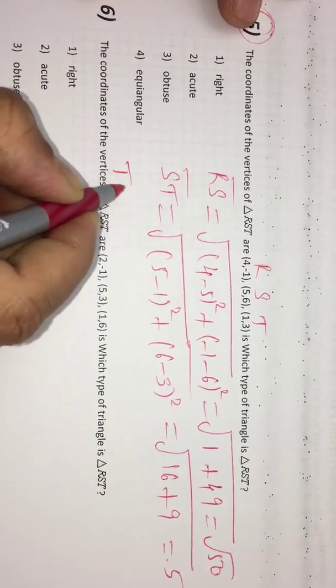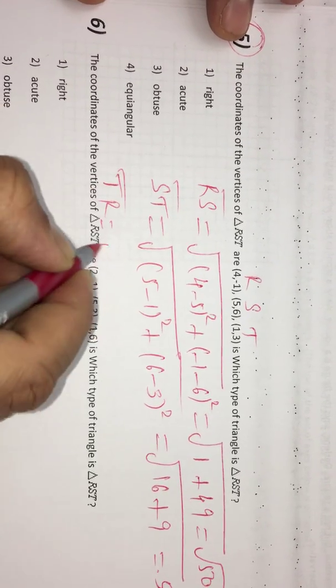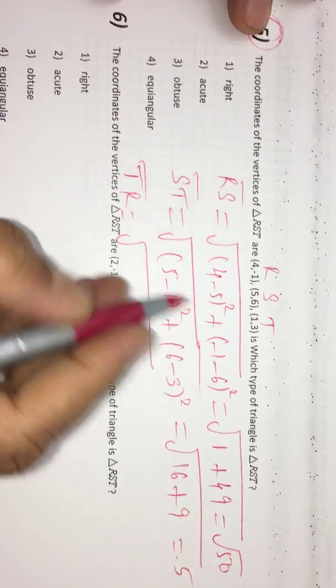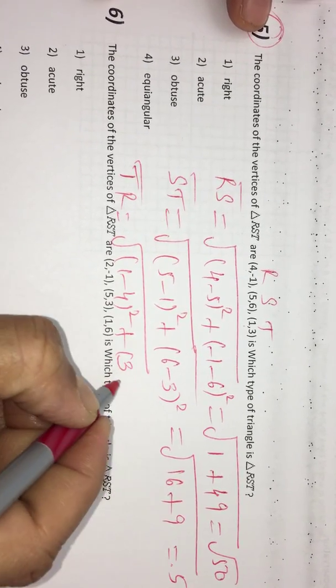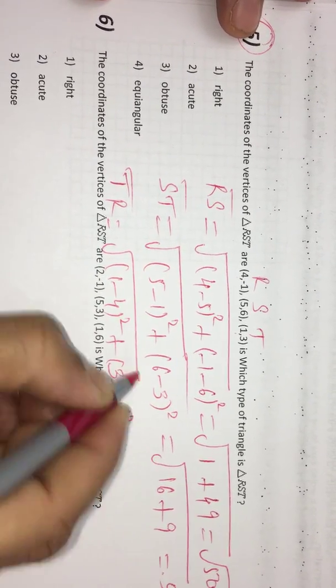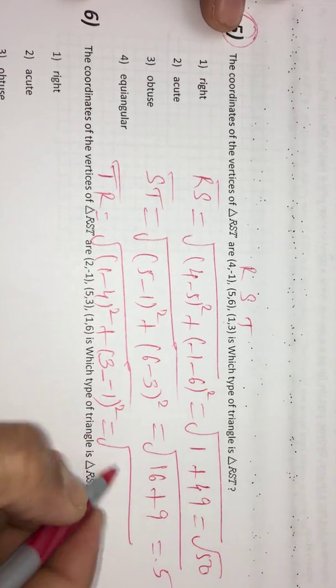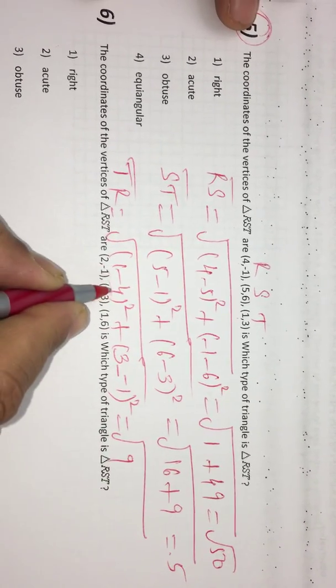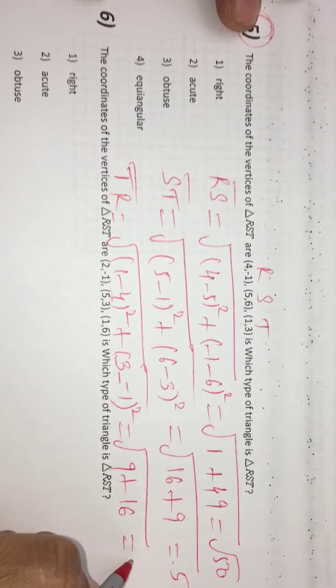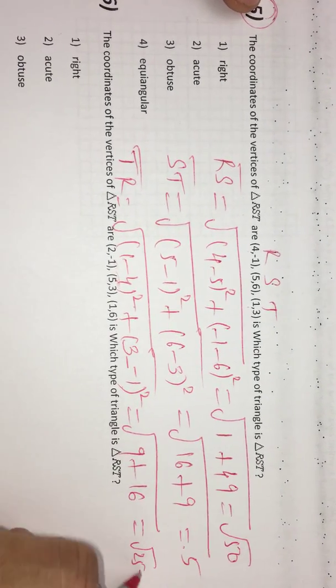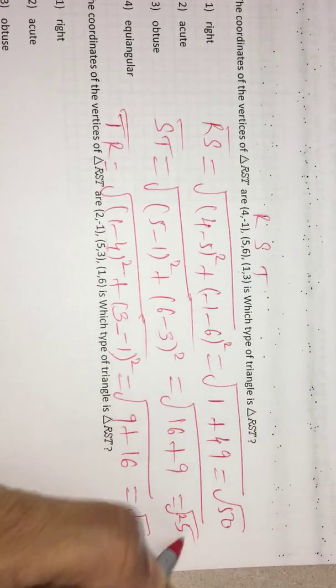Now TR, that means 1 minus 4 whole square plus 3 minus of negative 1 whole square. Then we get 9, 1 minus 4 is negative 3 square 9, and this is 4 square which is 16. I get root 25 or 5. Here also root 25 or 5.